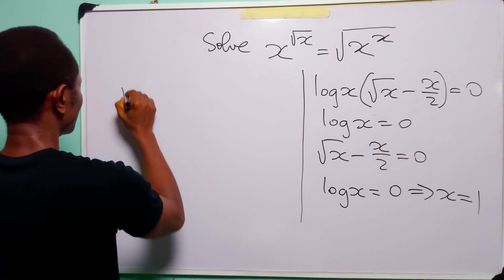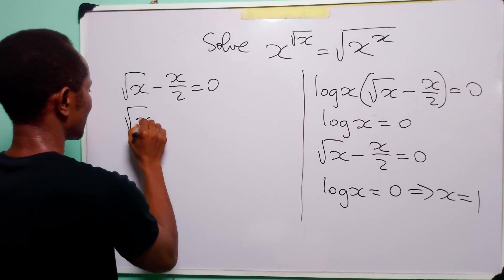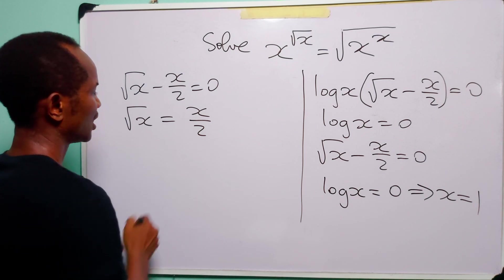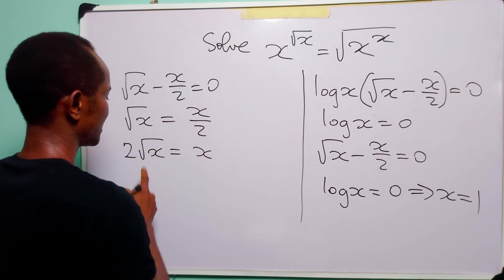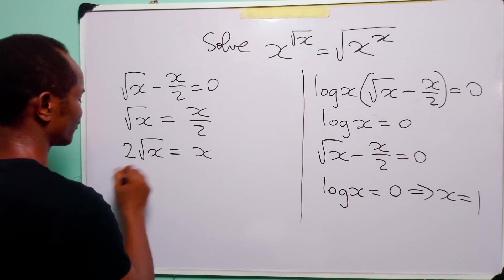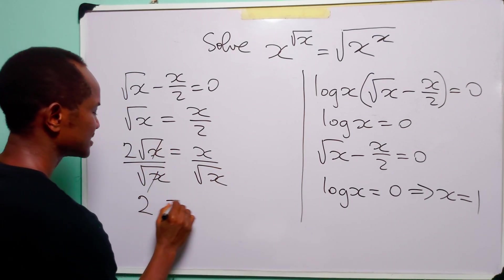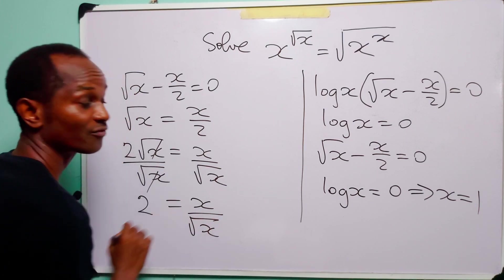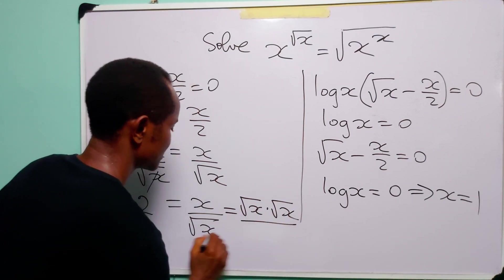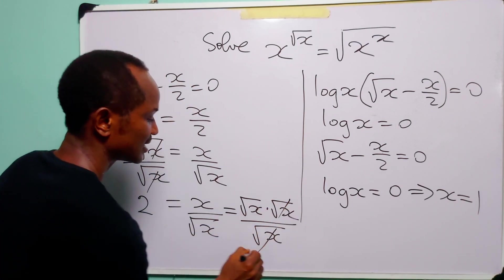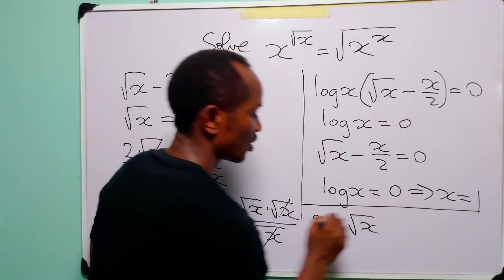In the second case, we have square root of x minus x over 2 is equal to 0, so the square root of x is equal to x over 2. Multiplying both sides by 2 gives 2 times the square root of x equals x. Dividing both sides by square root of x, and using the fact that x equals square root of x times square root of x, we get 2 is equal to the square root of x.